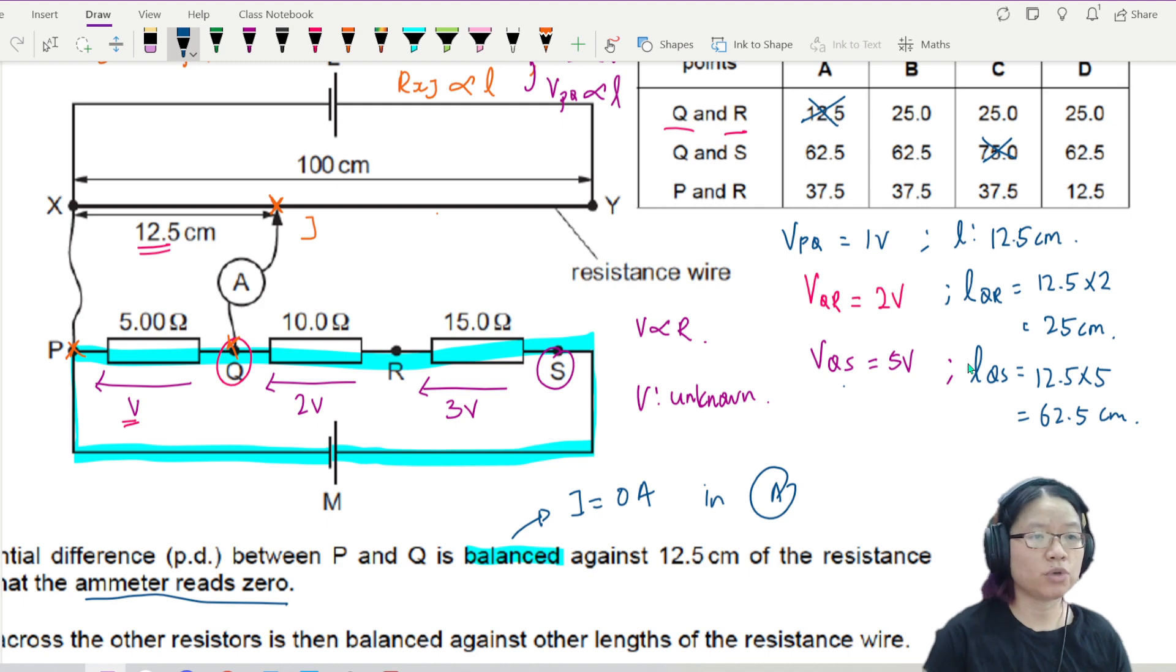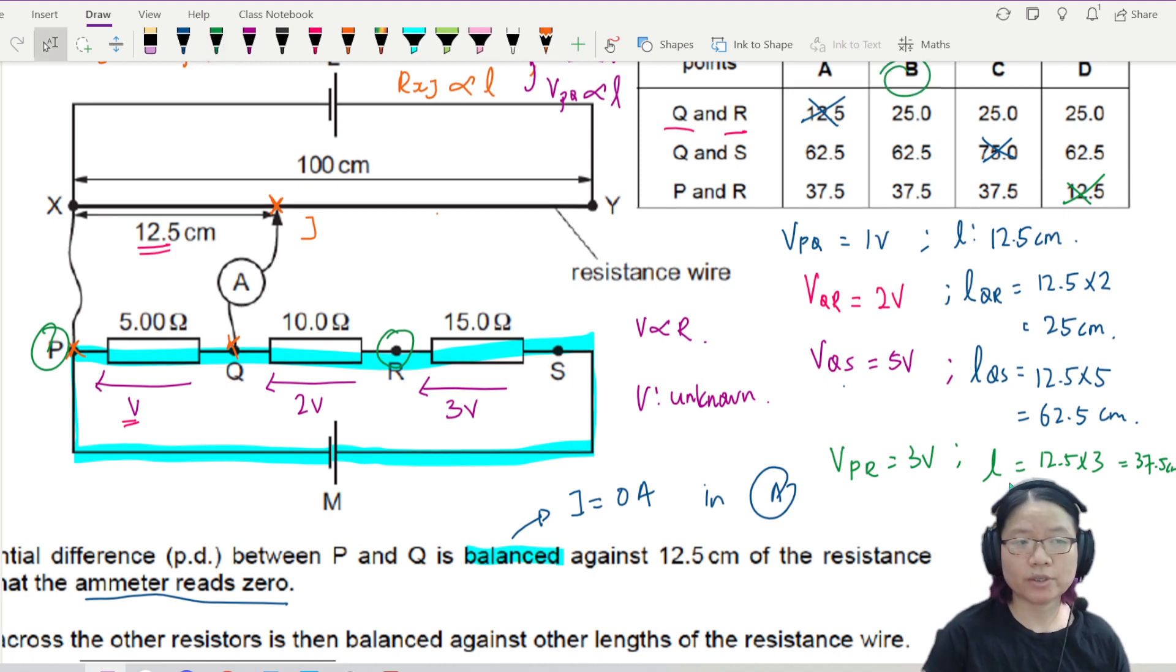And finally, we put it between P and R. If you're looking at P and R, we're talking about a drop of 3 volts. So VPR is equal to 3V. So then the length will be equal to 12.5 times 3, which is 37.5 cm. Yeet. So the answer here is B.